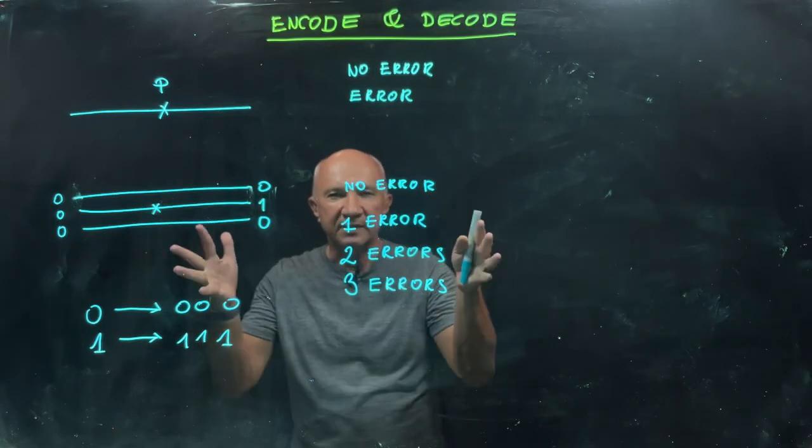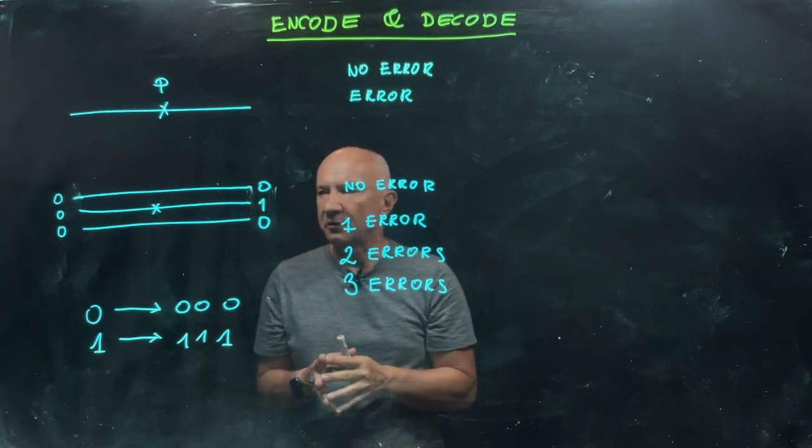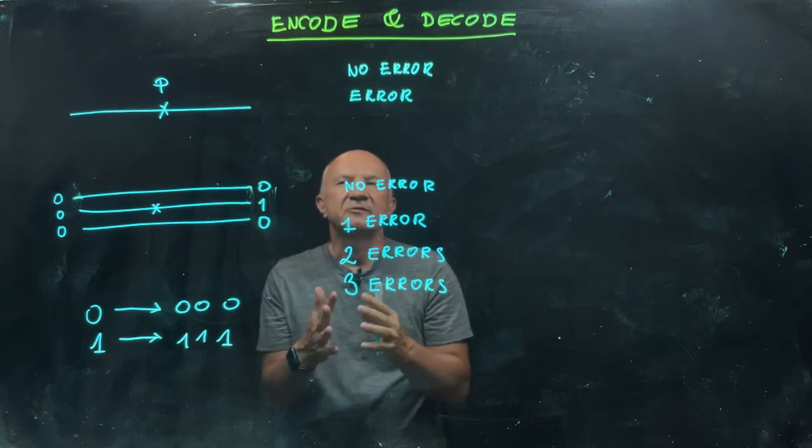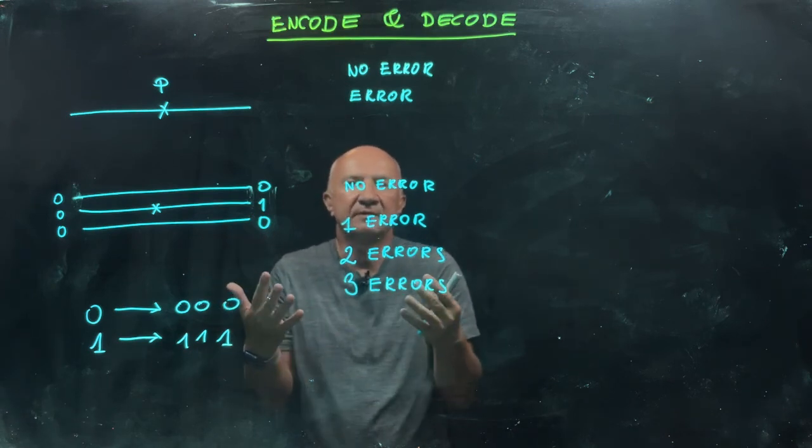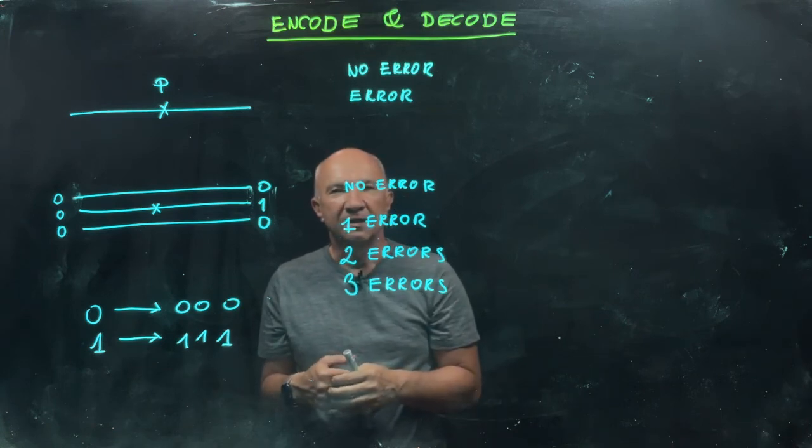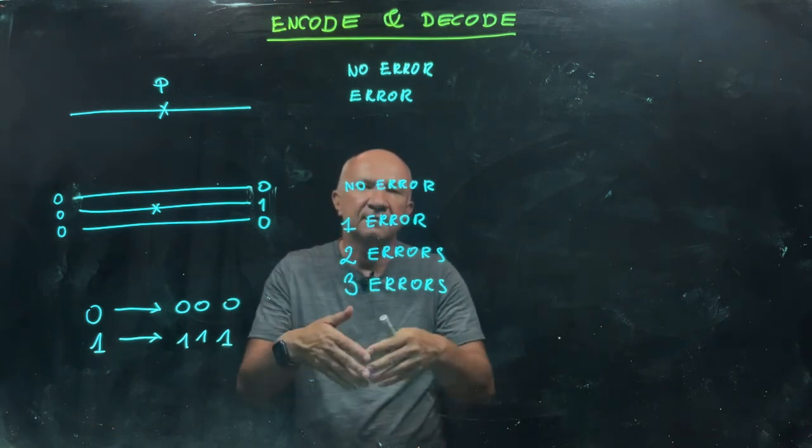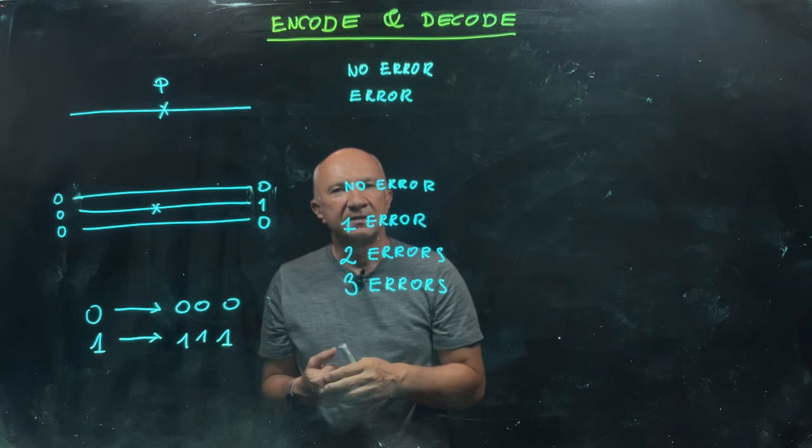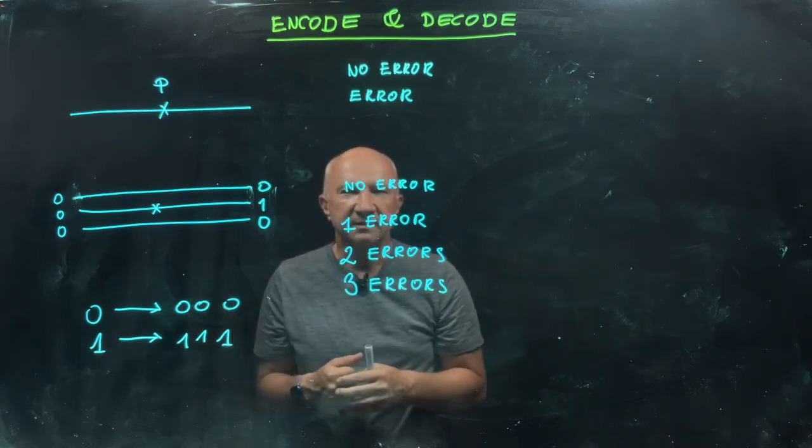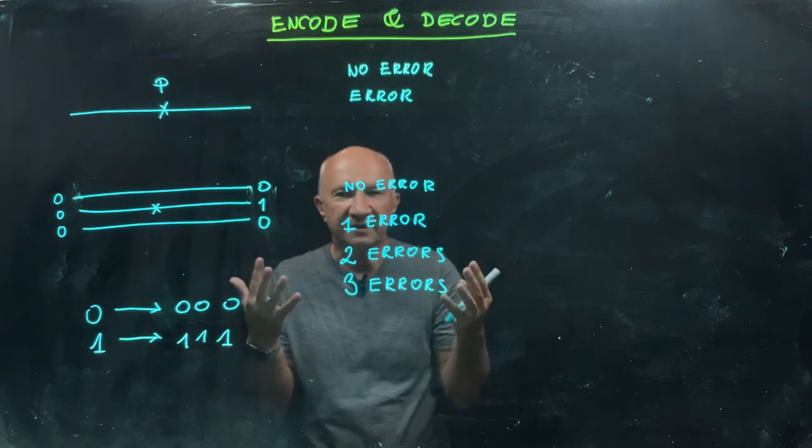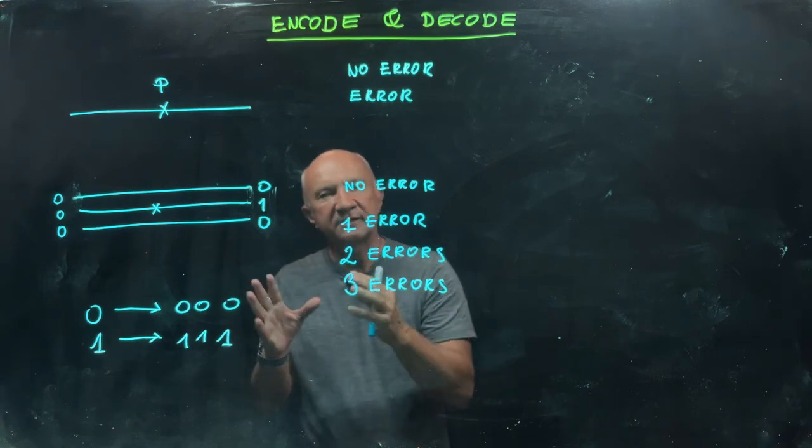Now, before we dive into quantum error correcting codes, let's ask the question: why encode and decode in the first place? It seems like we are doing more work by encoding a bit and then decoding a bit, sending more bits through the channel. Is it worth doing? What are we gaining exactly?